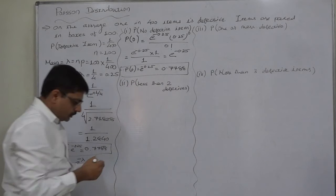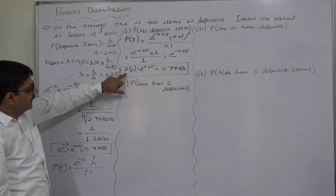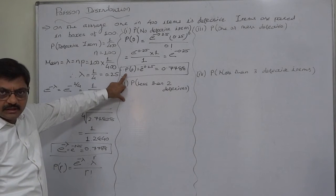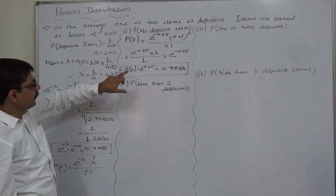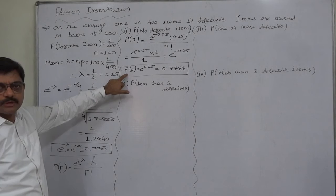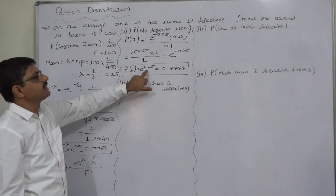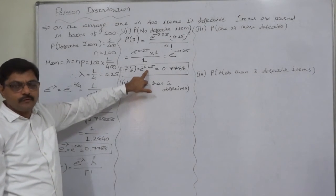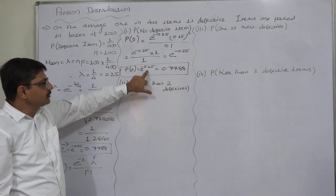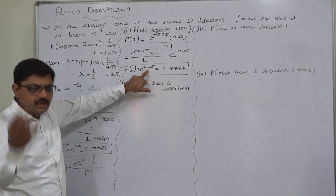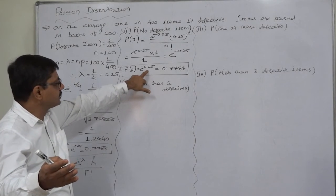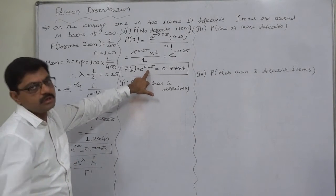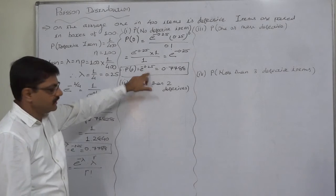Remember: in Poisson distribution, the probability of none — P(0) — is always e raised to minus mean, which in this case is 0.7788. This is a useful tip for solving many Poisson distribution problems, MCQs, or short answer questions.